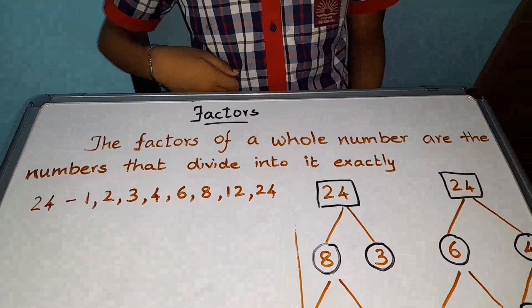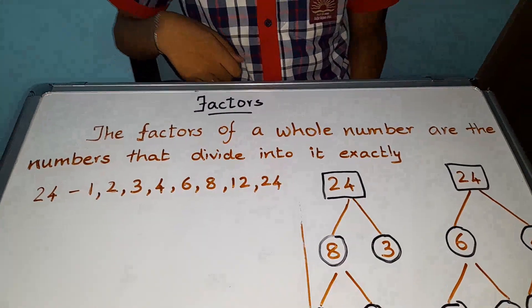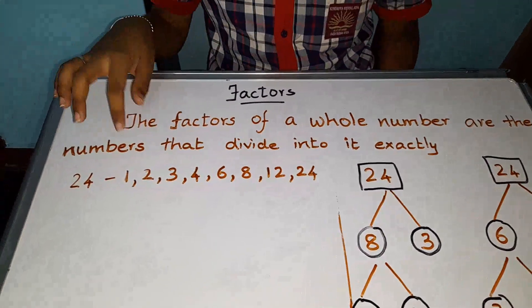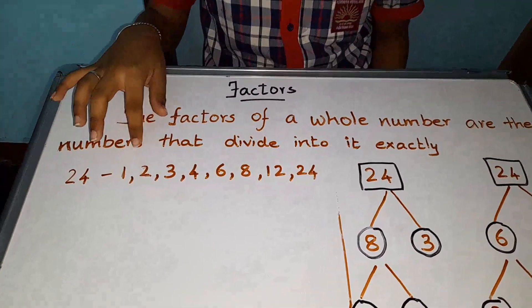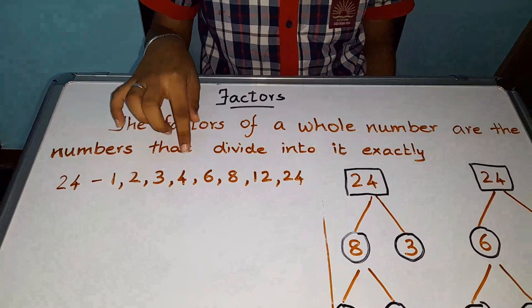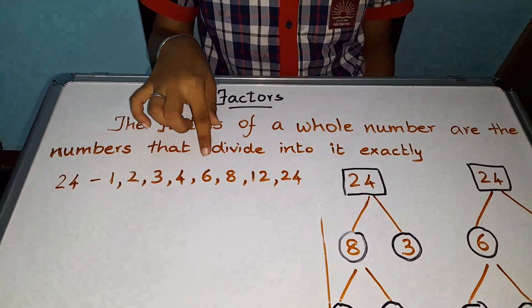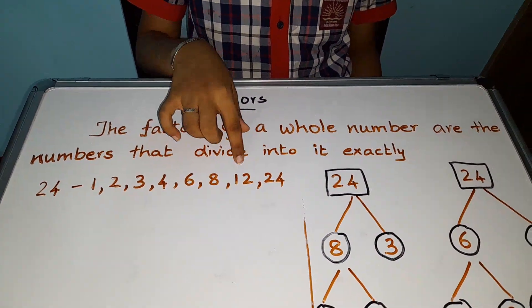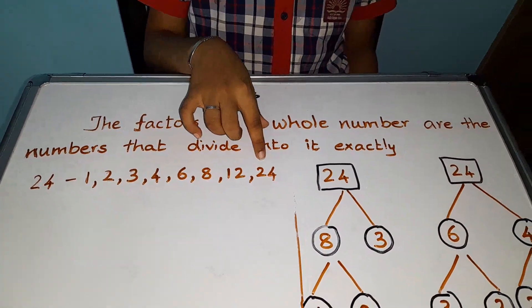I have taken the number 24. The factors of 24 are 1, 2, 3, 4, 6, 8, 12 and 24.